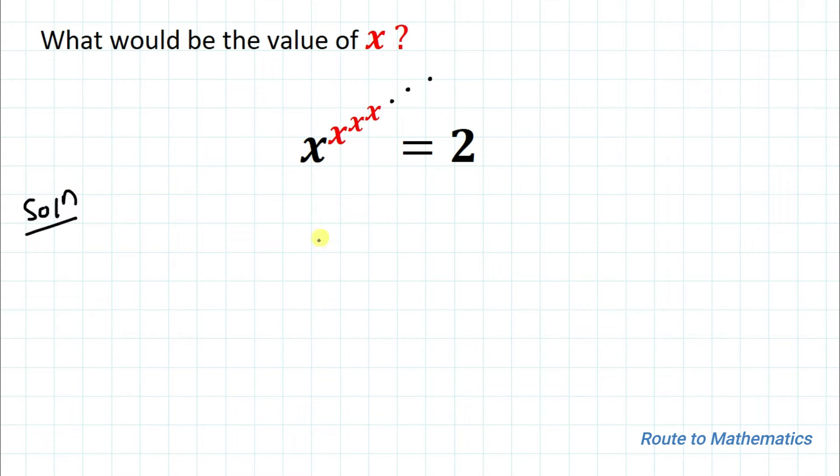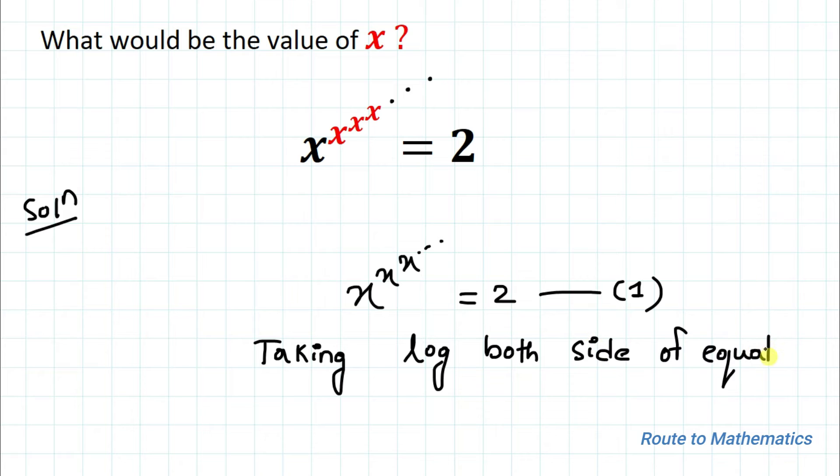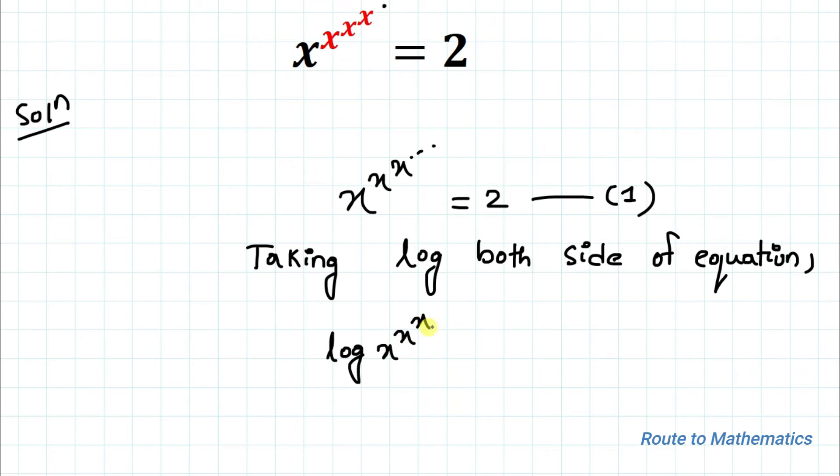We have given x to the power x to the power x goes to infinity equals to 2. Let's take it as equation 1. In the next step, taking log both sides of the equation, we have log of x to the power x to the power x goes to infinity equals to log 2.